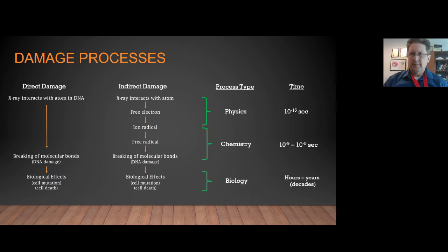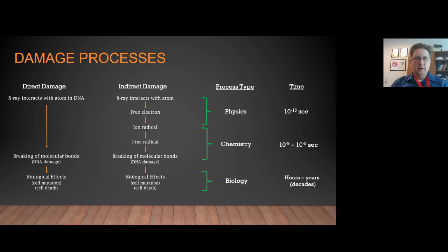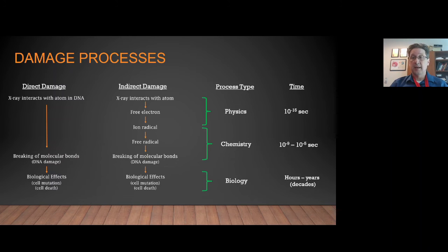So we've talked about ionization and about damage caused by these ionizations. Let's give a broad overview of how we can categorize these different processes. For direct and indirect damage caused by x-ray interactions — the actual interaction of radiation with atoms inside of the cell — these processes we refer to as physics processes. A physical interaction occurs: the free electron is released and travels off through the cell, causing further physical interactions. These physical processes happen on the order of 10 to the minus 19 to 10 to the minus 15 seconds — extremely fast, less than a picosecond, somewhere around the attosecond range.